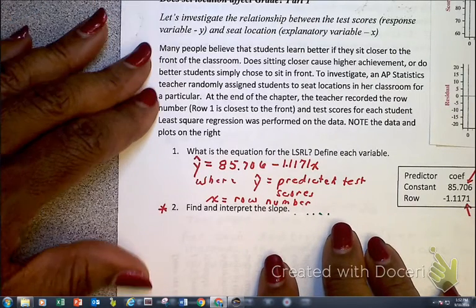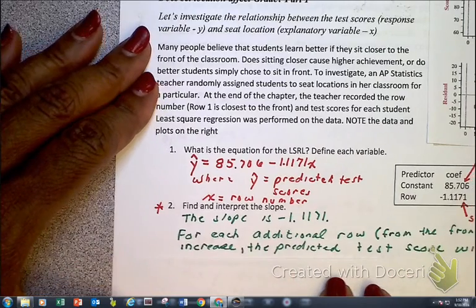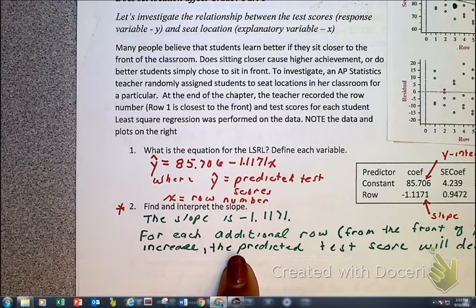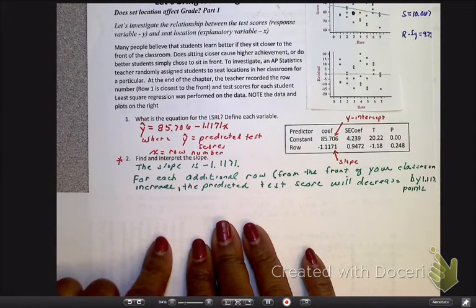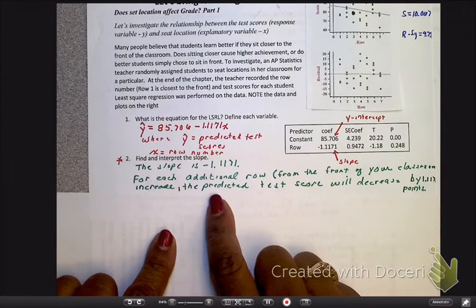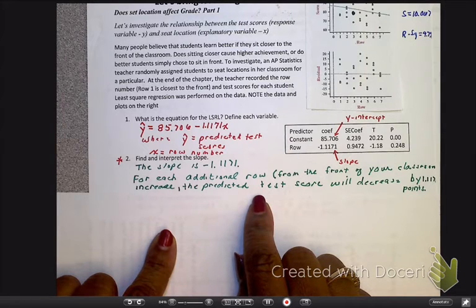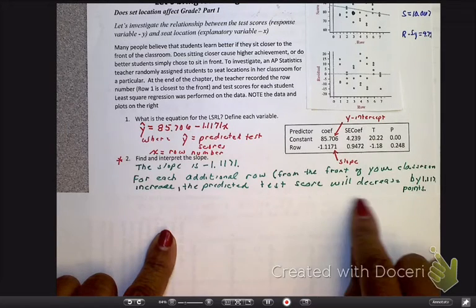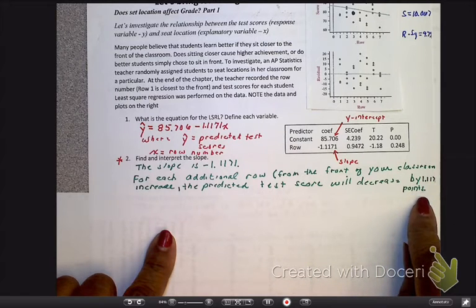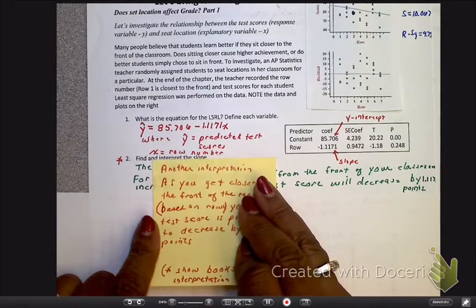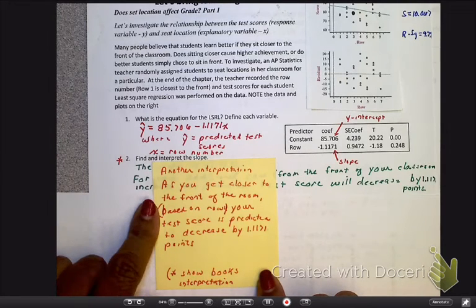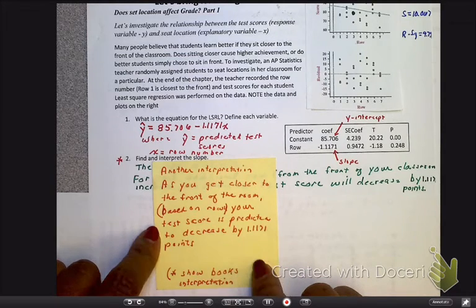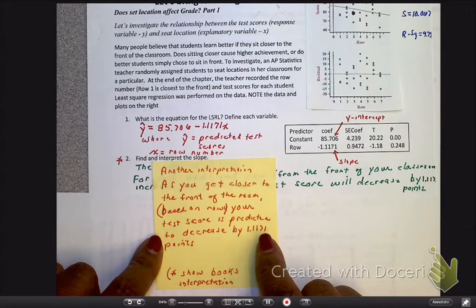Next thing we want to do is find and interpret the slope. You can use that rubric if you want. First of all, let's just name the slope. As I find and interpret the slope, remember the slope is right here. The interpretation: for each additional row, which is your input, and I put from the front of the classroom, we can predict that the test scores will decrease by that 1.117 points.